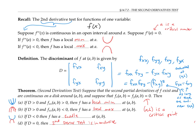To see that the second derivatives test is inconclusive when the discriminant is zero, I encourage you to try plotting on graphing software the functions f(x,y) = x⁴ − y⁴, g(x,y) = x⁴ + y⁴, and h(x,y) = −x⁴ − y⁴. You can check that the discriminant at the point (0,0) is zero for all three of these functions, yet one of them has a saddle, one has a local minimum, and one has a local maximum.